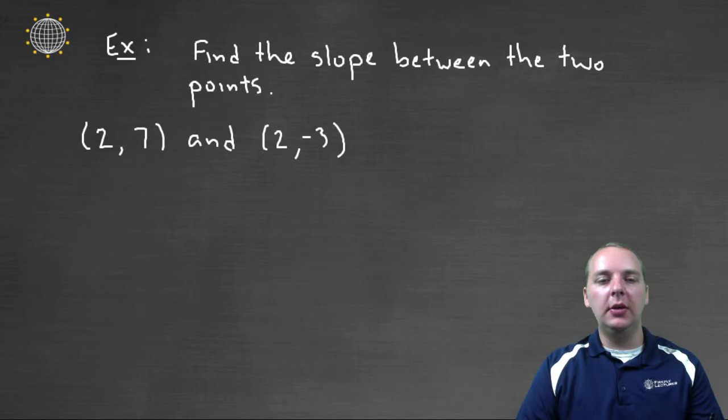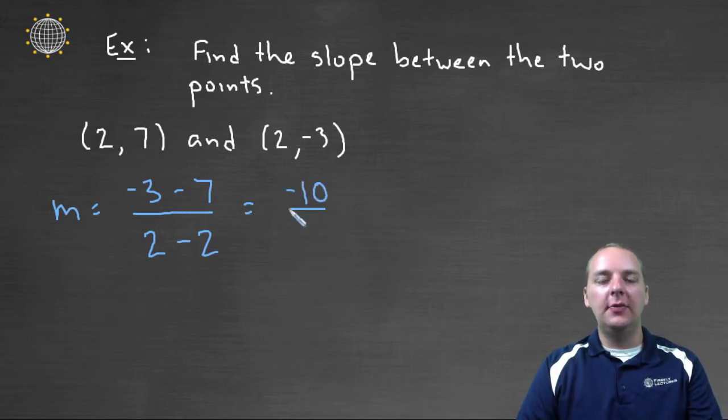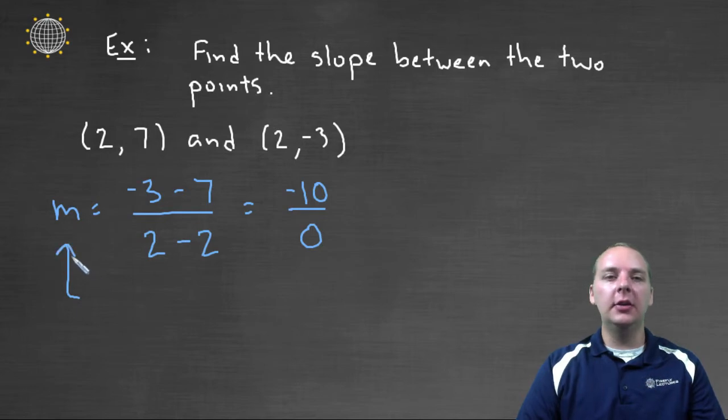Alright, last one, the slope between two seven and two negative three. So, m, our slope would be y-two minus y-one divided by x-two minus x-one. I won't label them this time. And so in this case, we'd get negative three minus seven is negative ten divided by two minus two, which is zero. Now that's weird, that's a strange answer. We can't divide by zero, so what does that mean? This tells us, in plain English, that this slope is undefined.